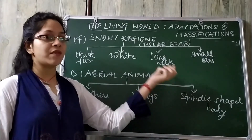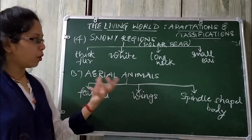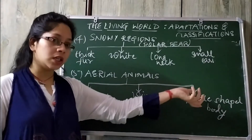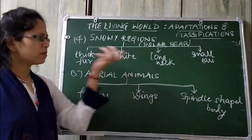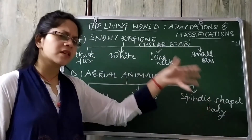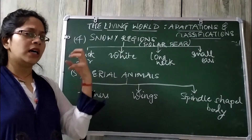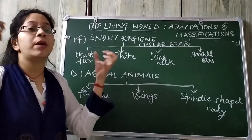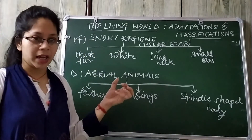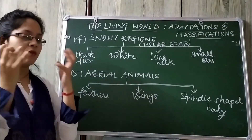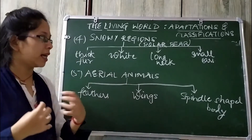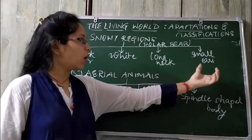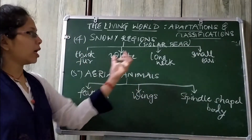Next, polar bears have a very long neck. They also have small ears. Why small ears? Small ears help so that body heat does not escape into the environment, keeping the body warm.